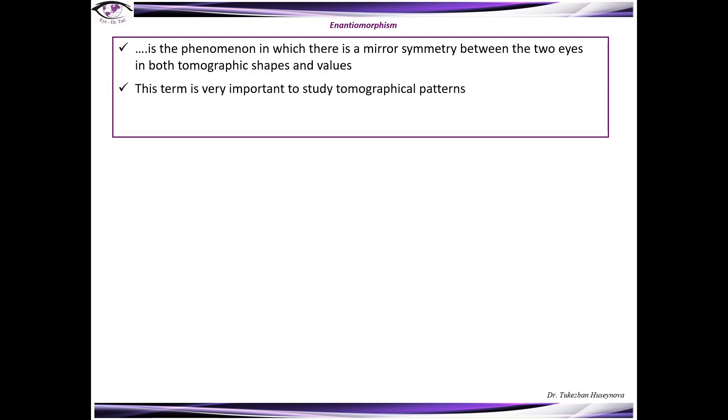Enantiomorphism. Enantiomorphism is the phenomenon in which there is a mirror symmetry between the two eyes in both tomographic shapes and values. This term is very important to study tomographical patterns. When in mirror-shaped corneas some irregularities exist, they may be considered as normal.